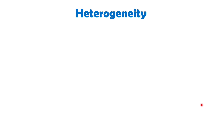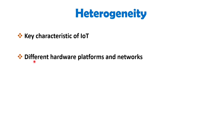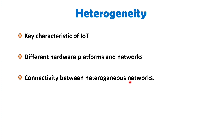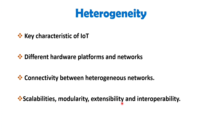The next IoT characteristic is heterogeneity. Heterogeneity in IoT refers to differences among various IoT devices and platforms. Devices in IoT are based on different hardware platforms and networks and can interact with other devices or service platforms through different networks. IoT architecture should support direct network connectivity between heterogeneous networks. The key design requirements for heterogeneous things and their environments in IoT are scalability, modularity, extensibility and interoperability.